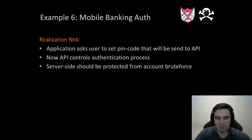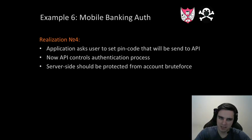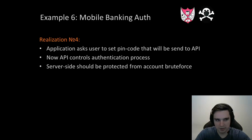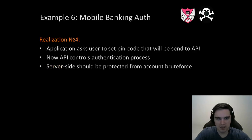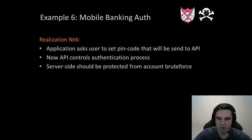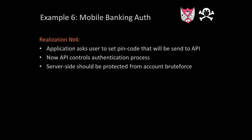The last realization: the application asks the user to set a pin code, and this pin code is sent to the API. The API controls the authentication process. In this case, you can control everything — brute force, enumeration, and other things on the server side. Using keystore/keychain, you can set that only the device pin code is usable. With the last realization, the user can use any pin code since there is no limitation — you can ask for six or eight symbols. But it is very important to protect the server side because everything depends on the server side.